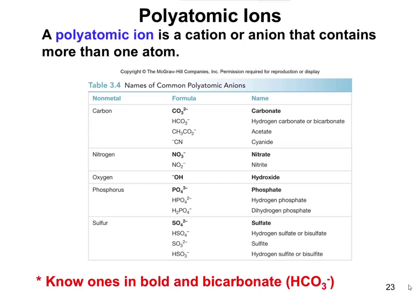A polyatomic ion is when you have an ion that contains more than one atom. You can look at the table here and see a whole list of polyatomic ions with multiple atoms. For instance, carbonate is CO3 2-: it has a carbon and three oxygens, giving an overall negative two charge. You need to memorize the ones in bold: carbonate, nitrate, hydroxide, phosphate, and sulfate. Also know bicarbonate, which is HCO3-.